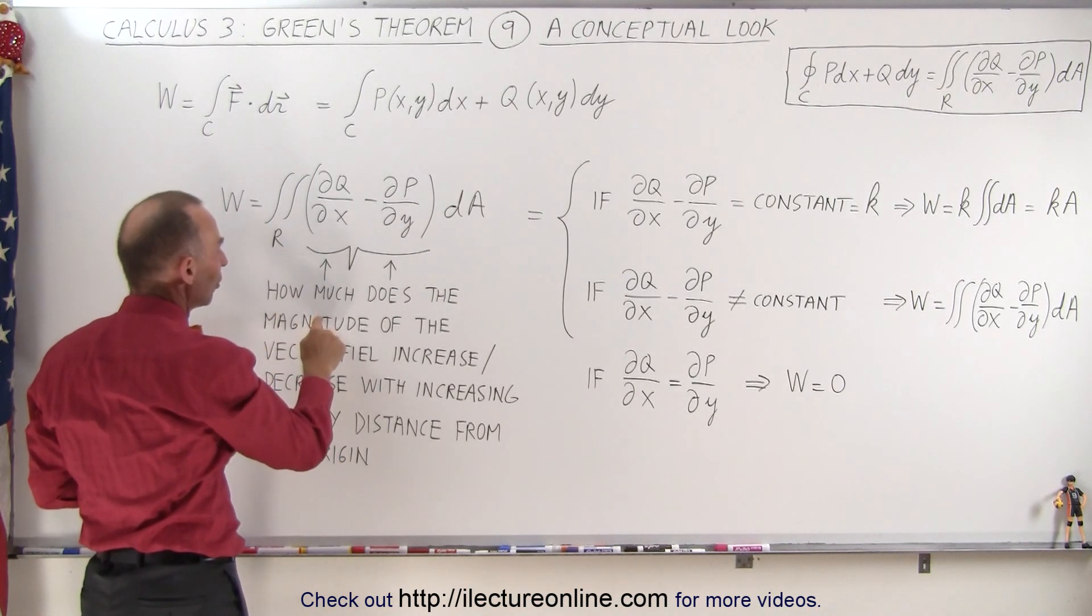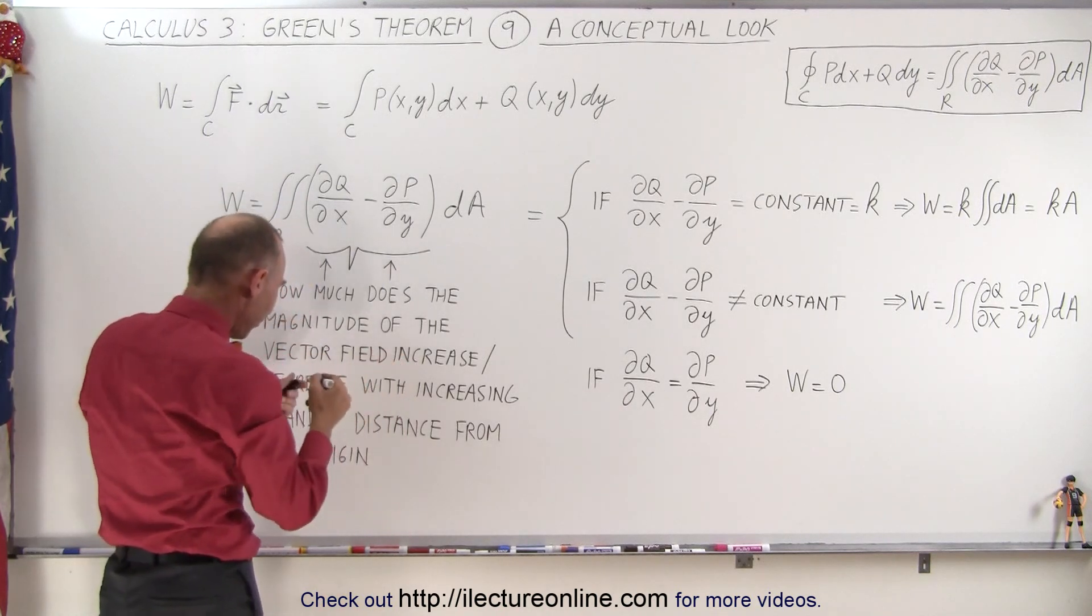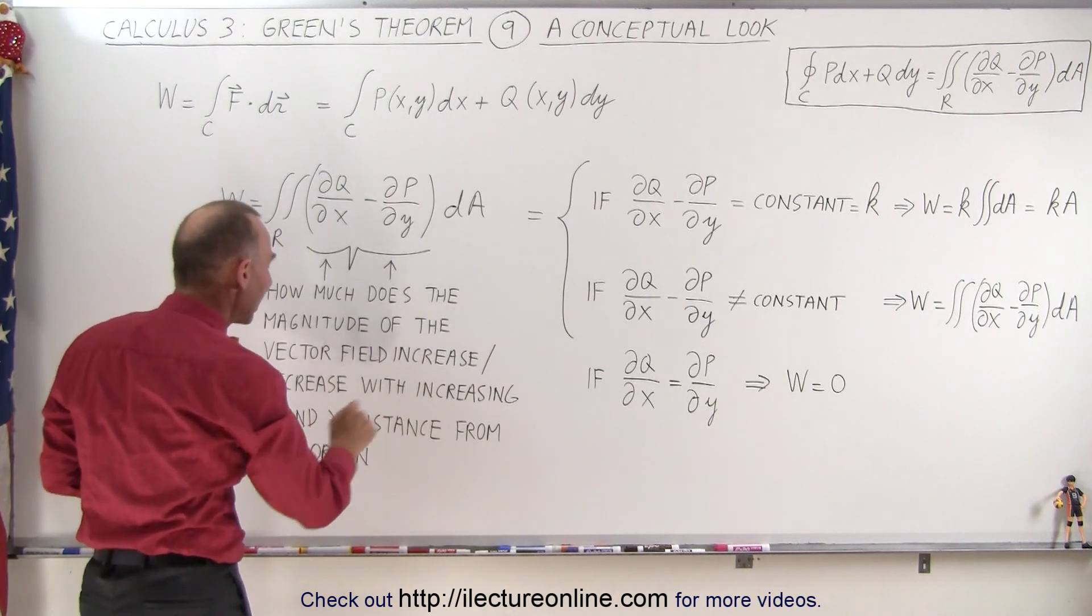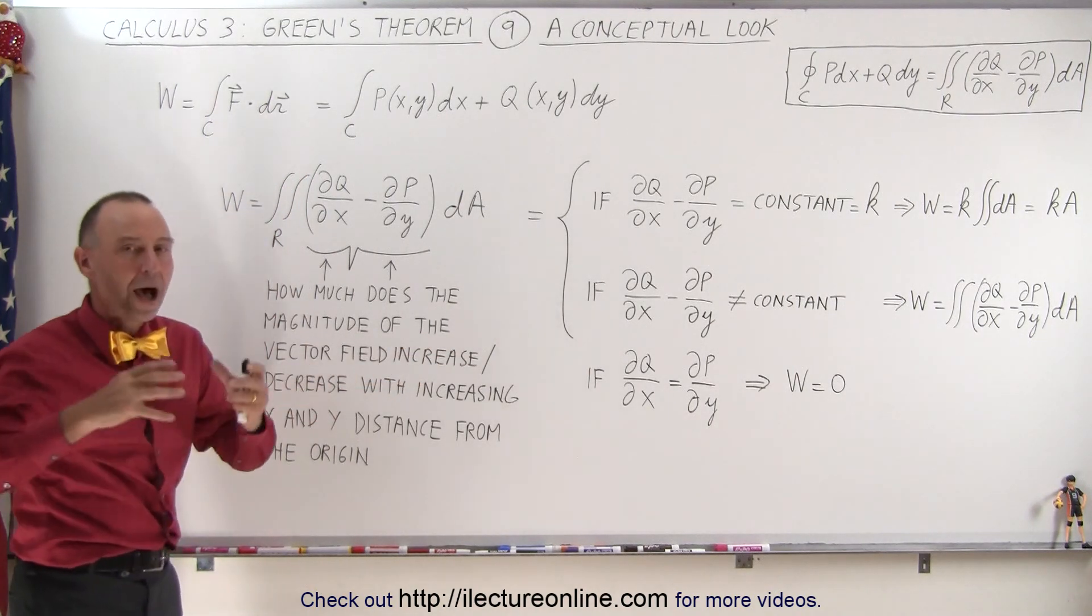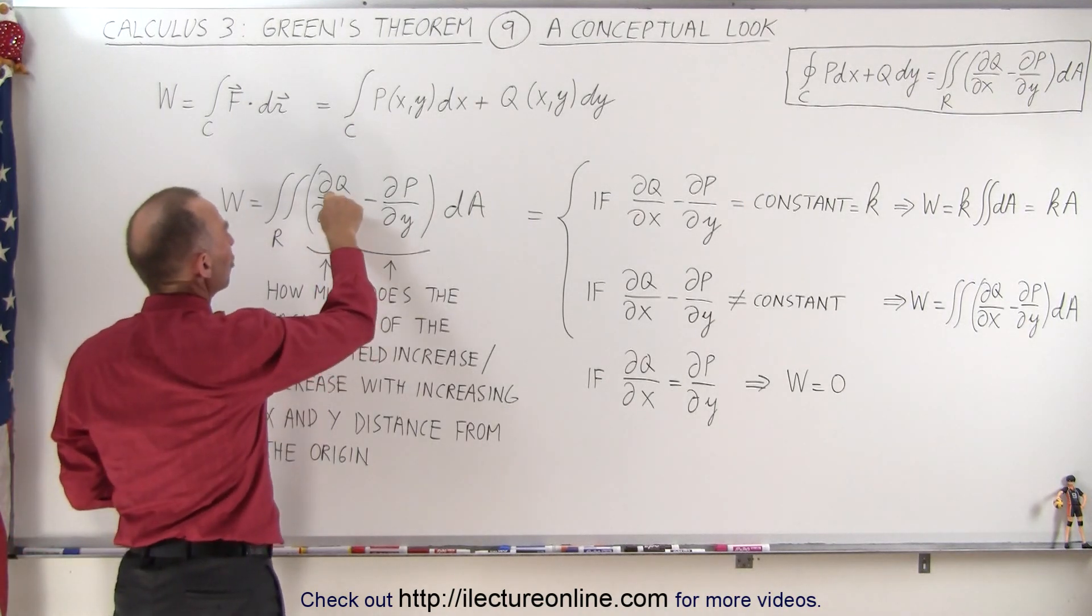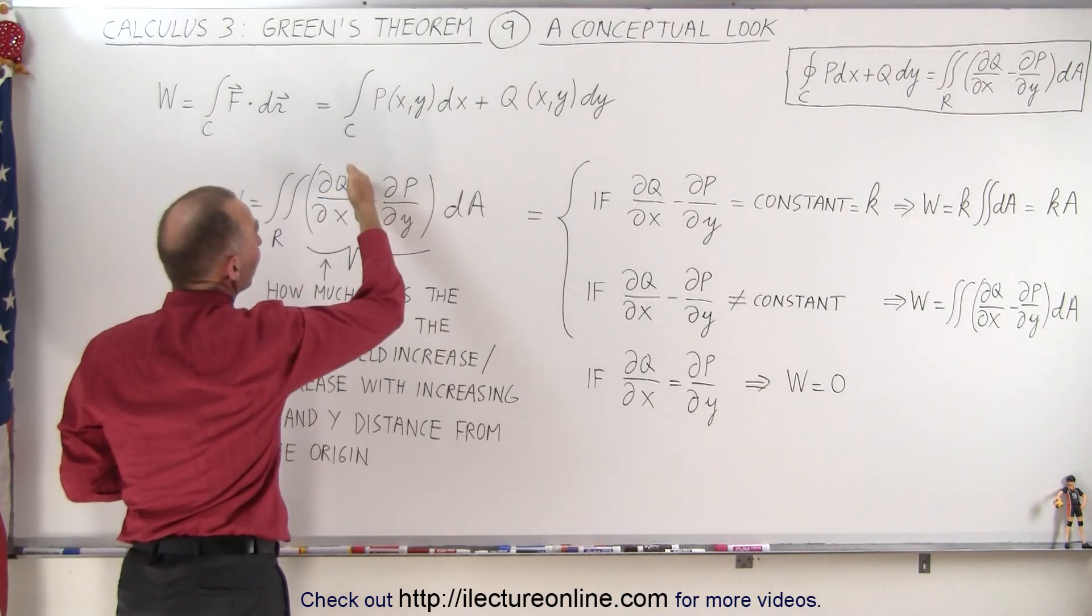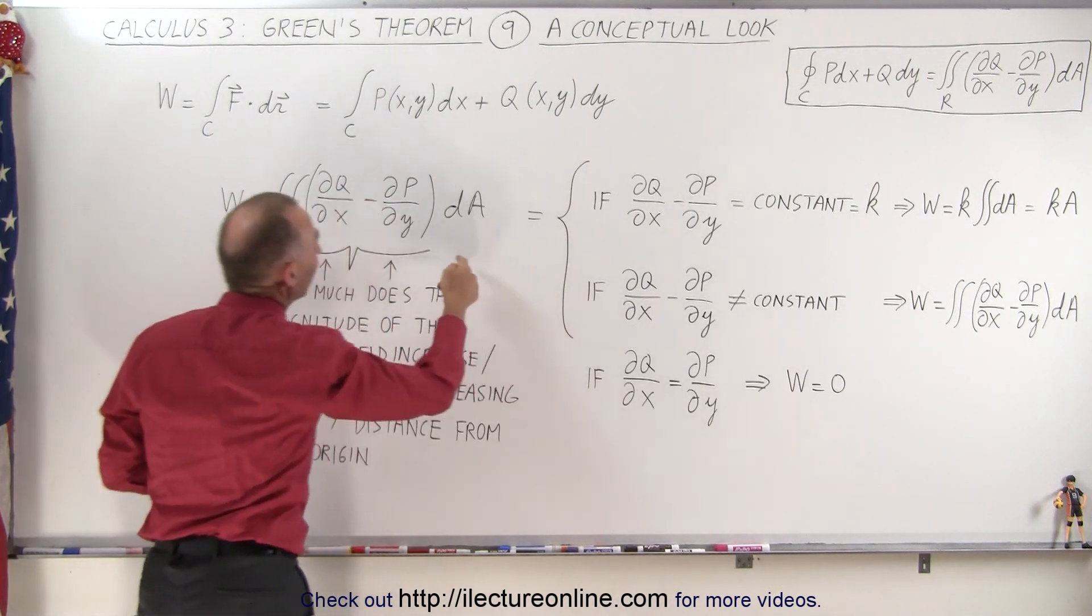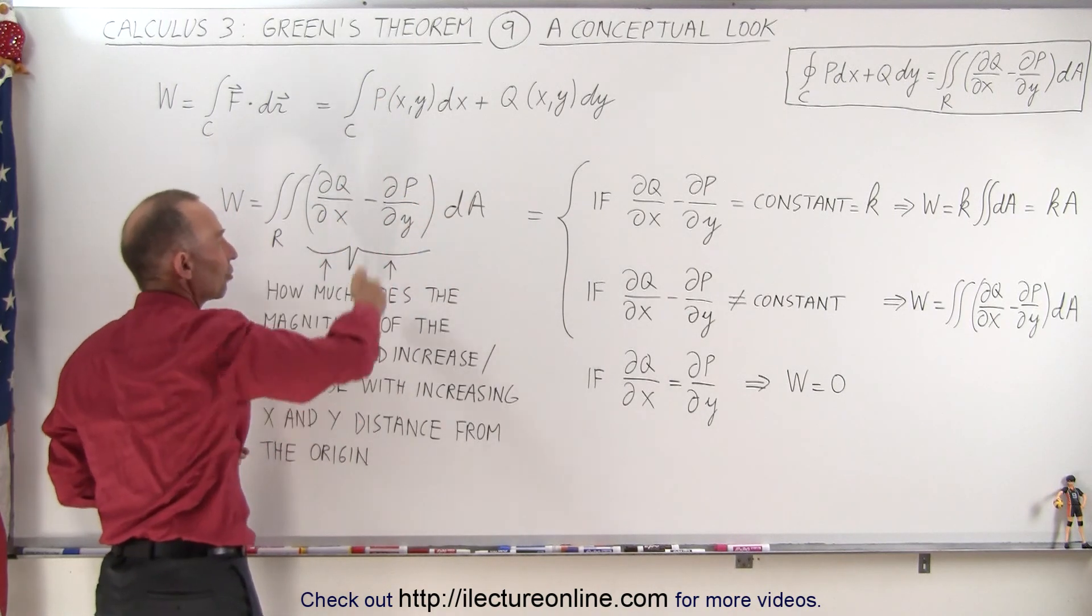This portion of Green's theorem represents how much the magnitude of the vector field increases or decreases with increasing x and y distance from the origin. That's defined by the change of the Q component - how much the y component of the vector field changes in the x direction, and how much the x component changes in the y direction.